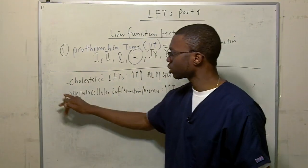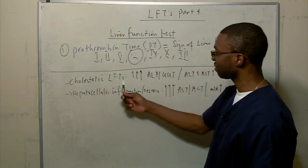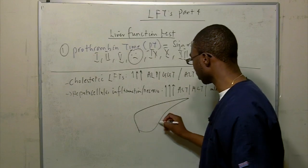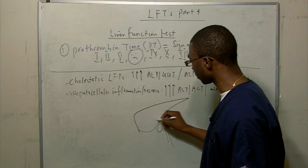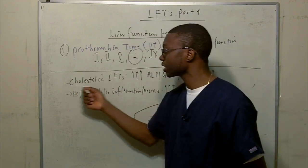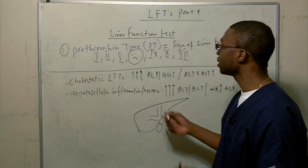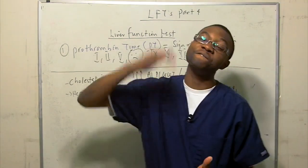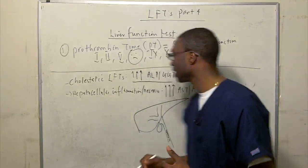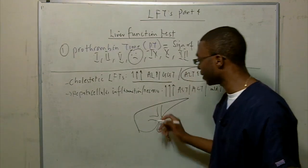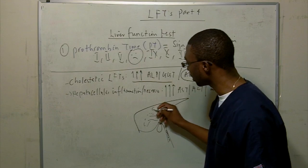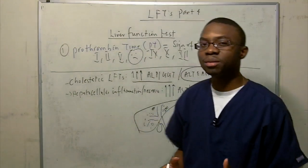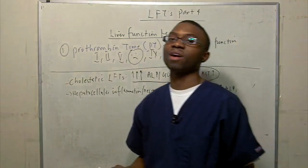To summarize, there are two patterns: cholestatic LFTs and hepatocellular inflammation. If you look at the liver, there's the gallbladder coming out of it. If it's cholestatic, it means the problem is from the biliary tree. What you'll notice on labs is that alkaline phosphatase and GGT are very, very high, while AST may be only slightly elevated — some hepatocytes around the biliary tree might die and spill a little AST or ALT, but it won't be that high.